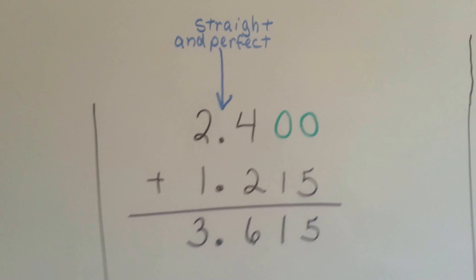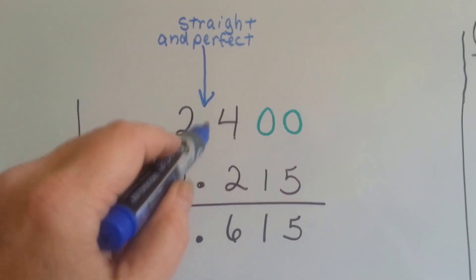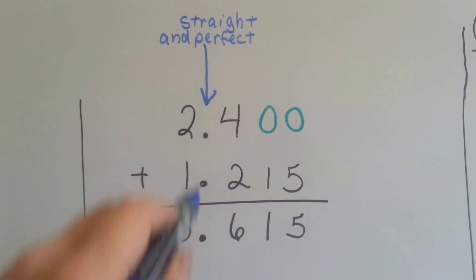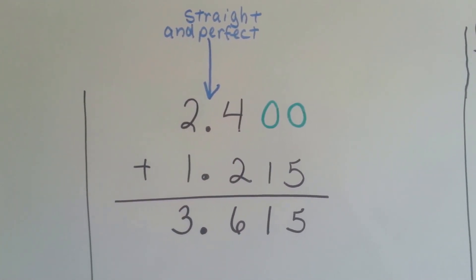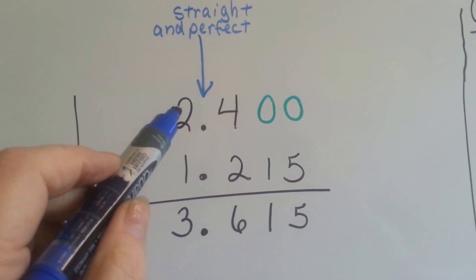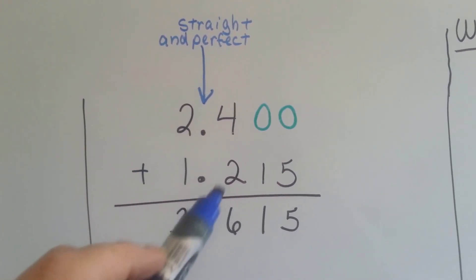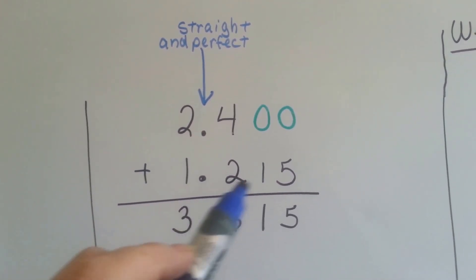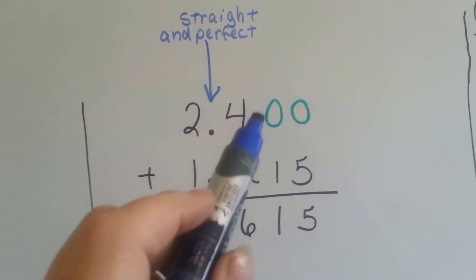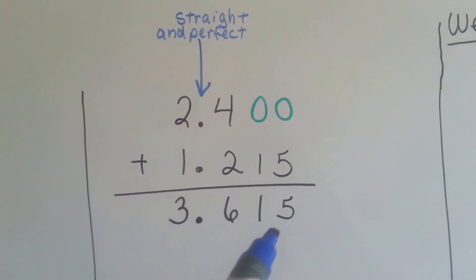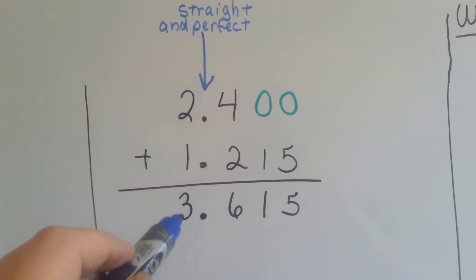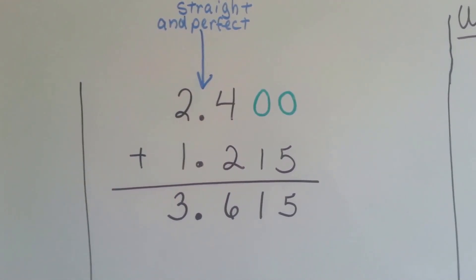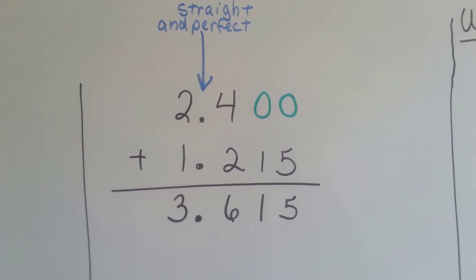We keep our numbers straight, perfect. We keep our decimal points straight and perfect. You don't want to cross your place values over because you'll get a bad grade. If we're adding 2 and 4 tenths to 1 and 215 thousandths, we can put our two zeros there, and then when we add, we have 5 and 1 and 6 and 3, and we have 3 and 615 thousandths. It helps us keep it all straight.